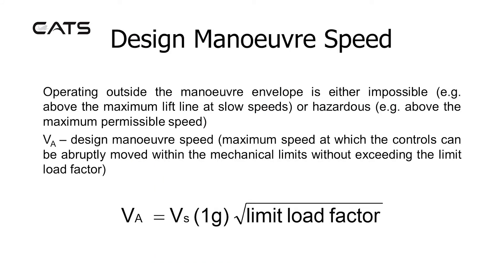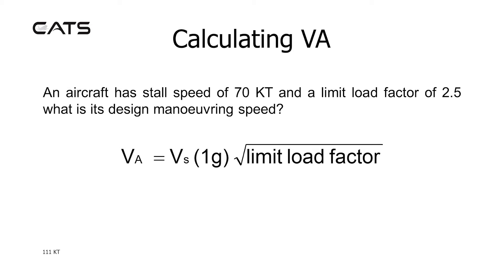VA, the design manoeuvring speed, is where the 2.5g line drops down from the maximum lift line. Operating outside the manoeuvre envelope is either impossible — for example, being above the maximum lift line at slow speeds the aircraft will stall — or hazardous above the maximum permissible speed. VA is the maximum speed at which the controls can be abruptly moved within their mechanical limits without exceeding the limit load factor. It is calculated by taking the stalling speed in the 1g environment and multiplying by the square root of the limit load factor. For example, if an aircraft has a stall speed of 70 knots and a limit load factor of 2.5, the design manoeuvring speed VA equals the square root of 2.5 multiplied by 70 knots, giving 111 knots.